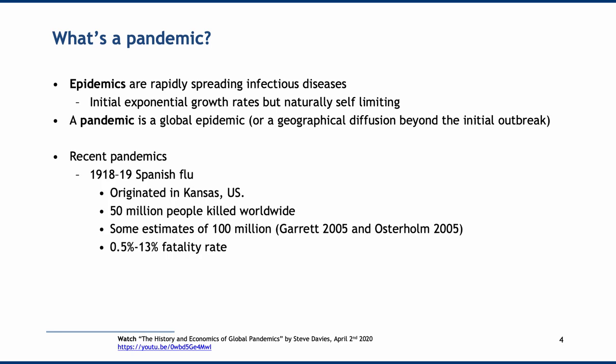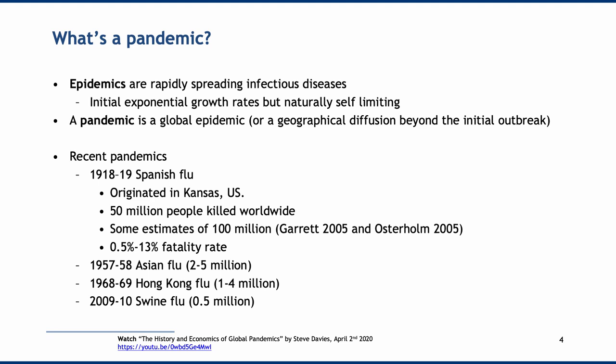Recent pandemics include the 1918–19 Spanish flu, which originated in Kansas in America, not in Spain. It killed over 50 million people worldwide — some estimates suggest as high as 100 million — with a 0.5 to 13% fatality rate. The Asian flu of 1957–58 claimed around 2 to 5 million lives, and the 1968–69 Hong Kong flu claimed between 1 and 4 million. In 2009–10, swine flu claimed about 0.5 million lives. Pandemics happen reasonably regularly.